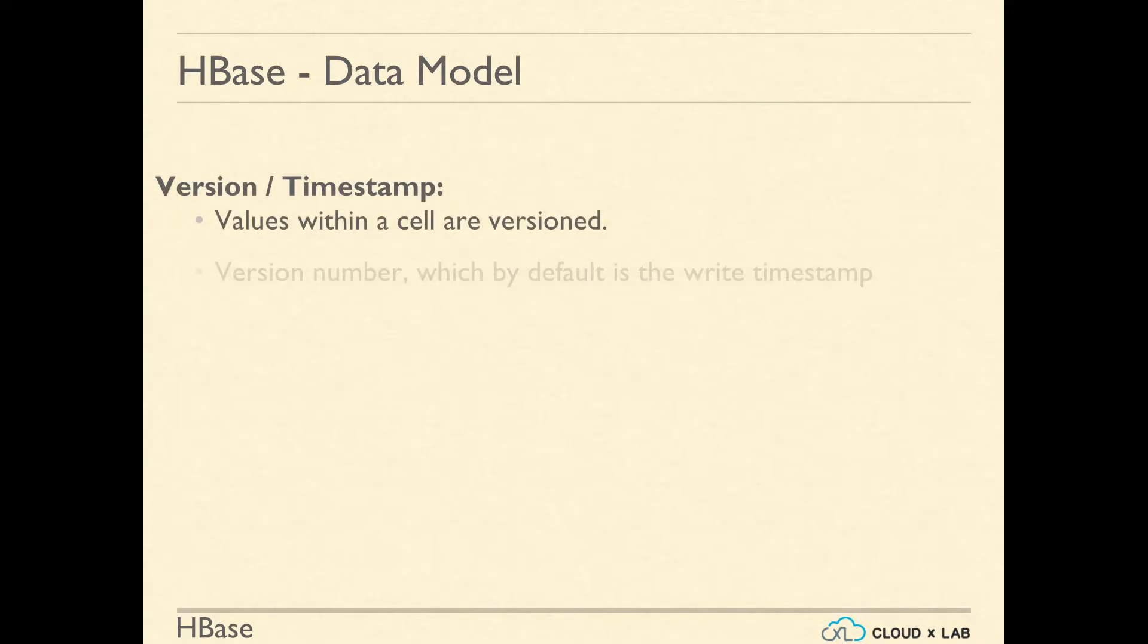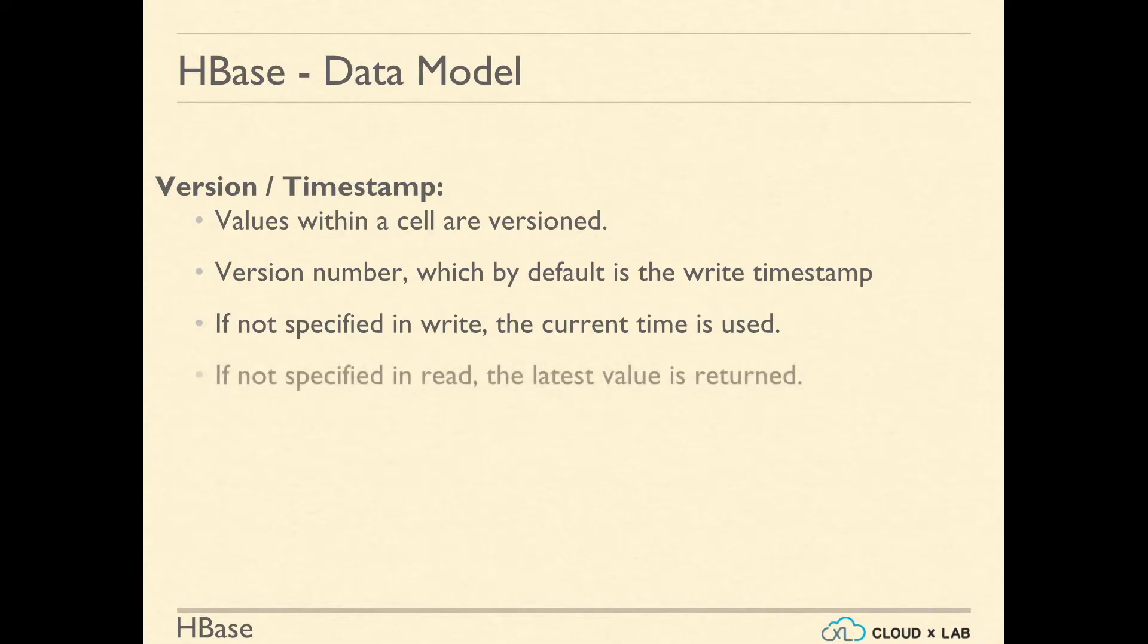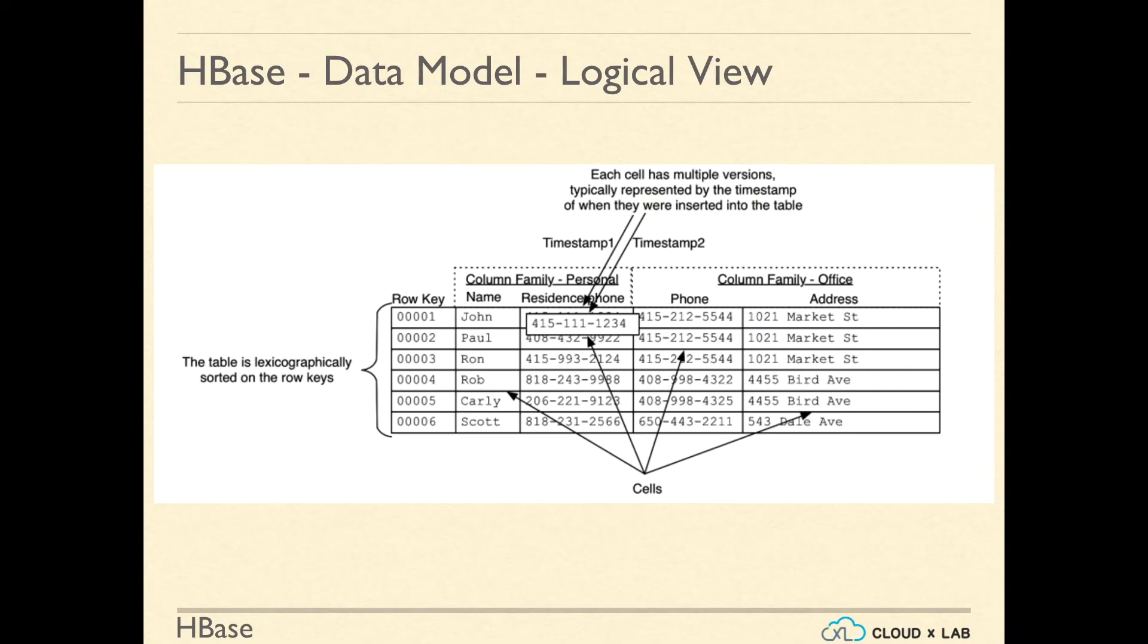Values within a cell are versioned. Version number is by default the timestamp at the time of writing. If it is not specified at the time of writing, the current time is used. If you do not specify the version number at the time of reading data, the latest value is returned. The number of versions retained by HBase is configured for each column family. The default number of cell versions is 3.